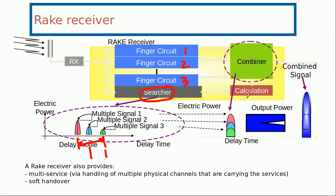And based upon the input of the searcher, basically the calculation block would calculate how much it needs to delay the first copy and the second copy so that it can combine them into a more powerful signal using the combiner block.